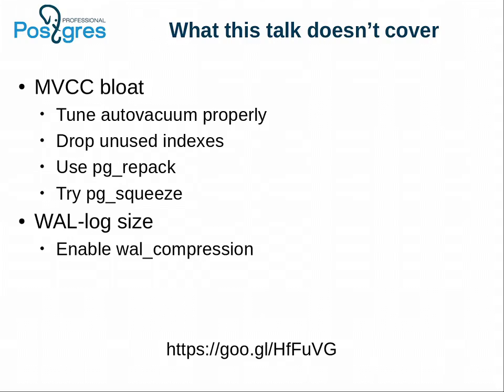What I want to cover in this talk: MVCC bloat — you can find a lot of great talks, articles, and documentation about vacuum tuning. Try PG Repack and PG Squeeze extensions. Another point is WAL log — it can take a lot of space, but it's a derivative of your data. Since the 9.5 release, there's an option to enable WAL compression. Try it — it shows quite good performance.